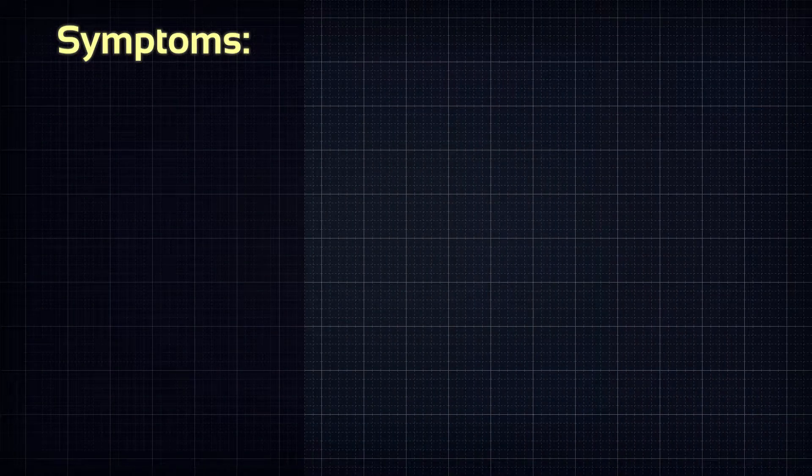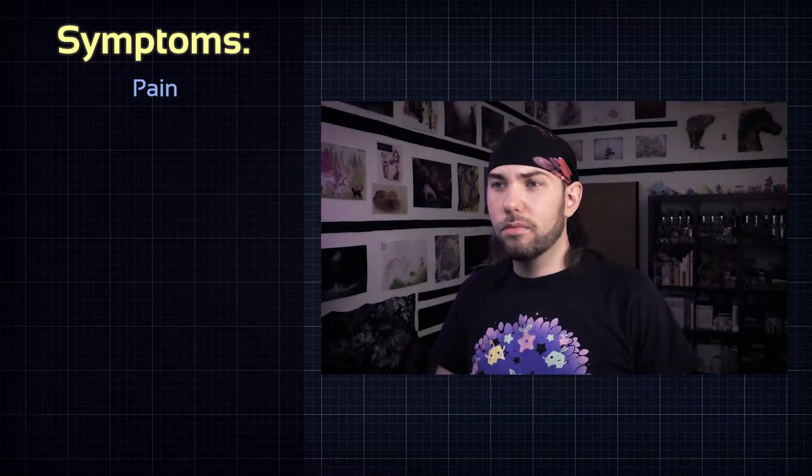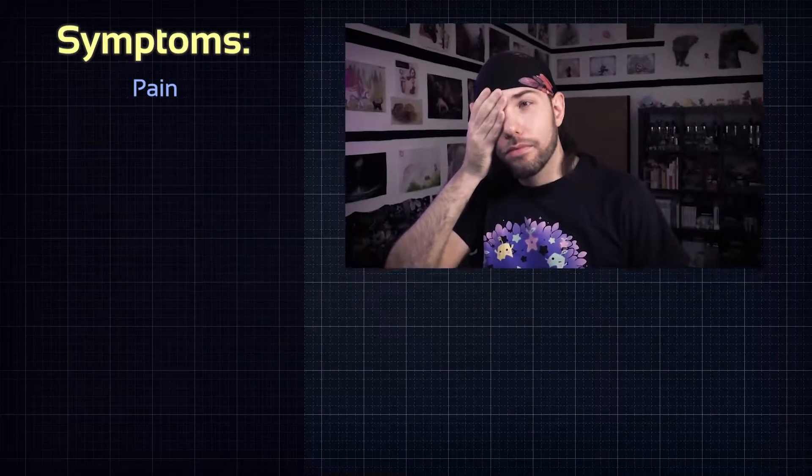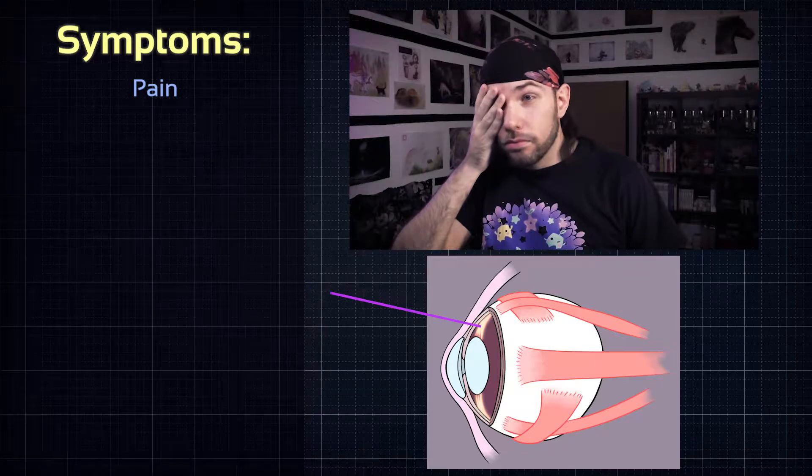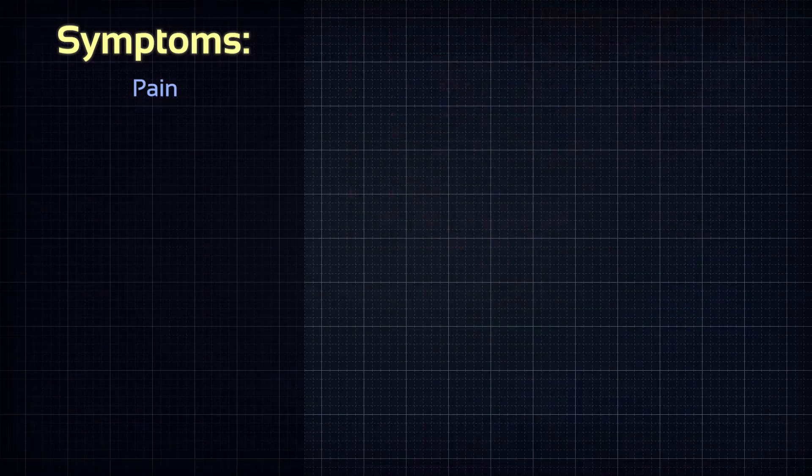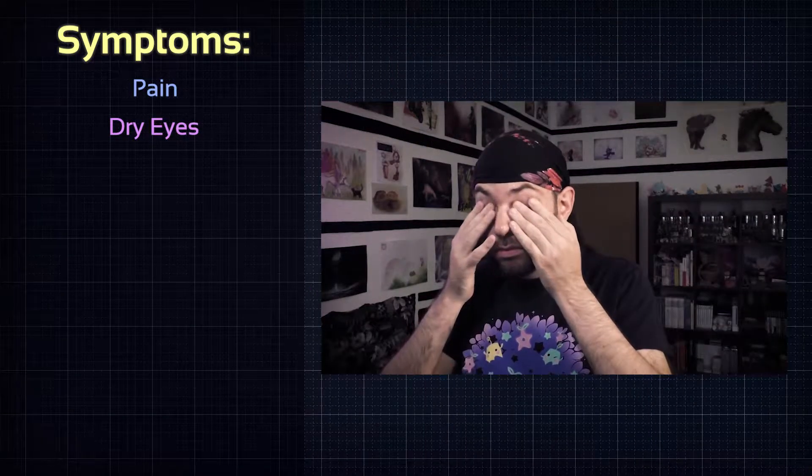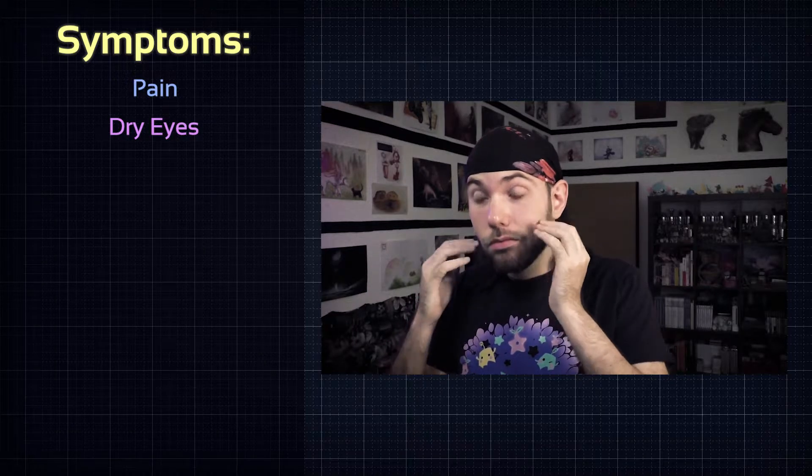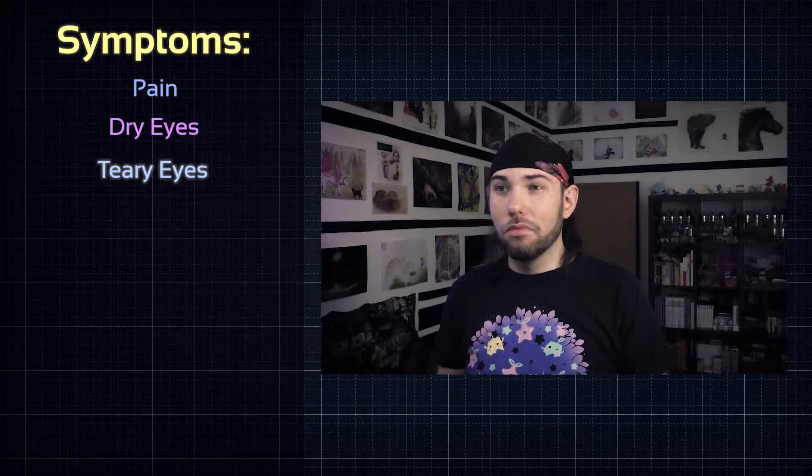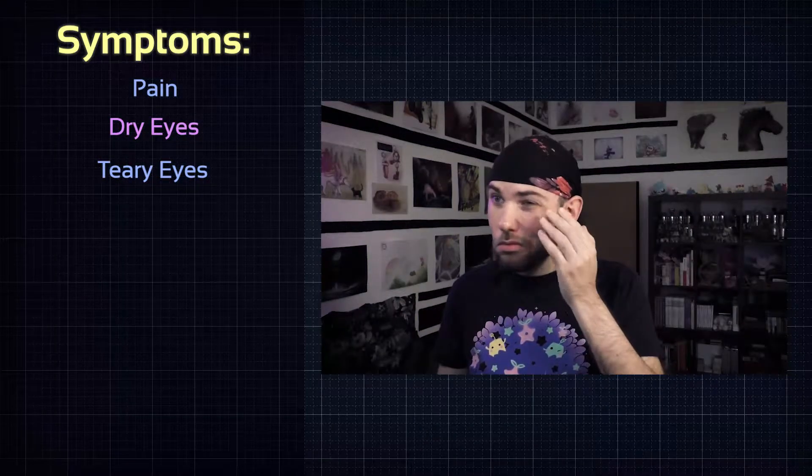Let's talk about the symptoms next. Pain in and around the eyes can be an indicator that your muscles are overexerted, especially the ciliary and extraocular muscles. Dry eyes are very common. When focusing we just tend to blink less. Or sometimes the eyes get teary, the opposite therefore.